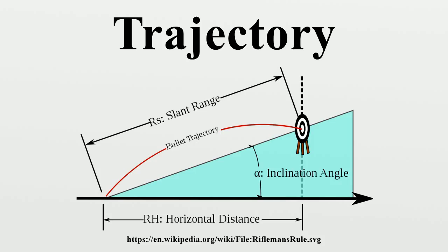In other words, pretend that the inclined target is at a horizontal distance equal to the slant range distance multiplied by the cosine of the inclination angle, and aim as if the target were really at that horizontal position.